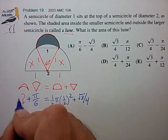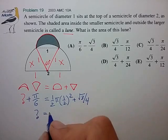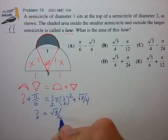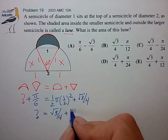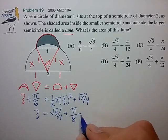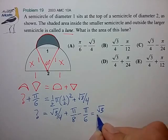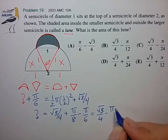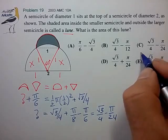And now we can quickly solve for our question mark here. Bring the pi over six to the other side, and we have root three over four plus pi over eight minus pi over six. And if you work out this fraction, it works out to pi over 24. And that looks like choice C.